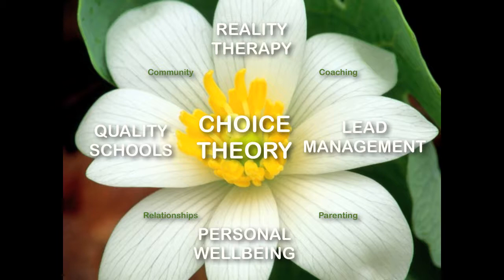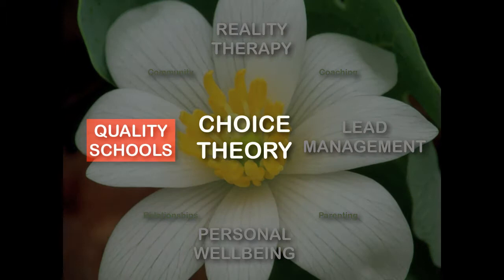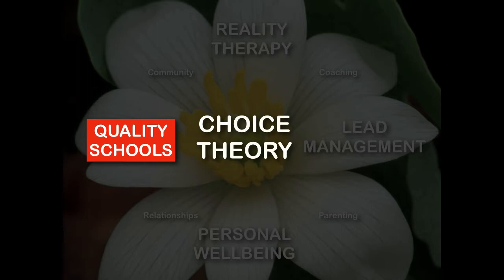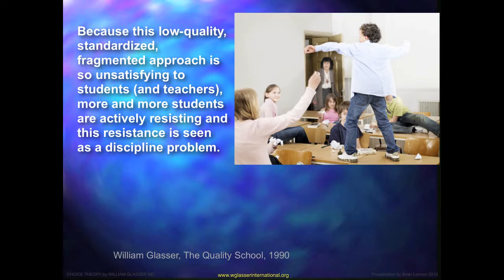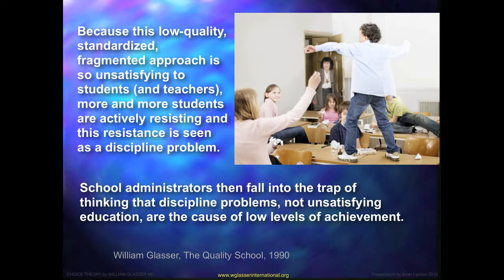The next area is the Quality Schools. Glasser began his career working with delinquent girls in the Ventura School, giving him insights into therapy and education he never departed from. He identifies the problems in school systems worldwide: low levels of achievement, discipline problems, poor attendance and punctuality, and students who reject subjects and even learning itself. Because this low-quality, standardised, fragmented approach is so unsatisfying to students and teachers, more students actively resist, and this resistance is seen as a discipline problem. School administrators then fall into the trap of thinking that discipline problems — not unsatisfying education — are the cause of low achievement.